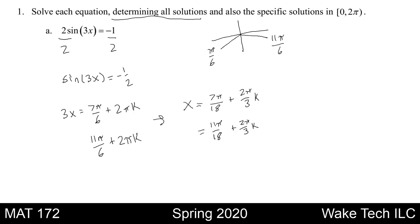When k equals 0, that is just these two numbers. When k is equal to 1, we can write this as x equaling 7 pi over 18 plus 2 pi over 3 times 1, which is just 2 pi over 3.